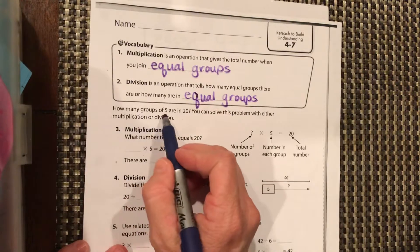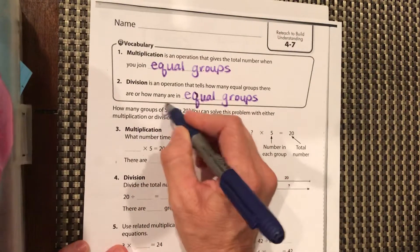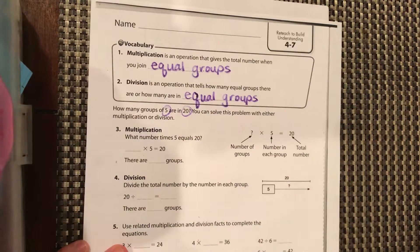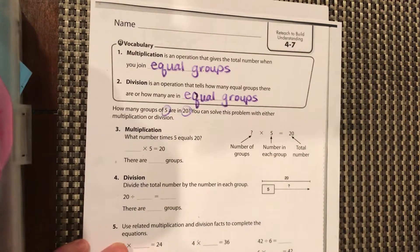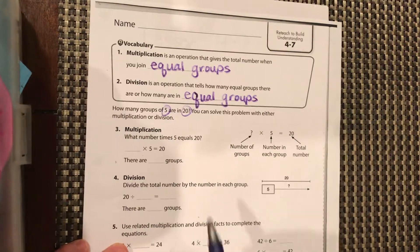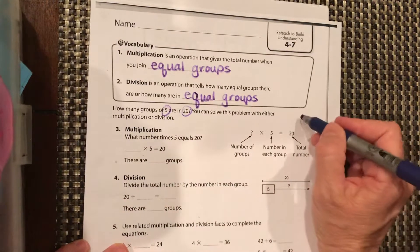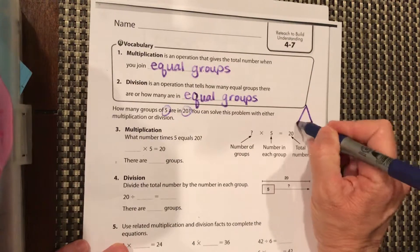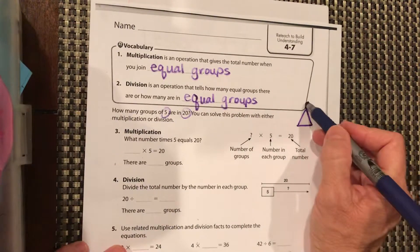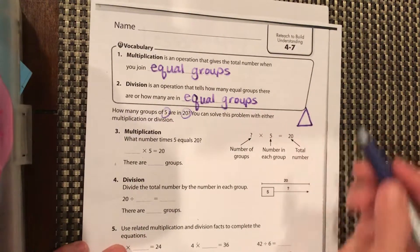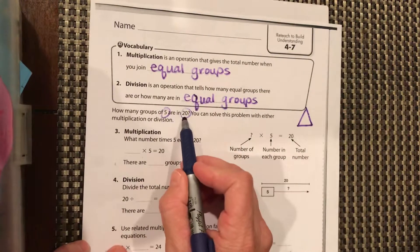How many groups of five are there in 20? You can solve this problem with either multiplication or division. First, you have to figure out, do you have the largest number here? So because you want to do your fact family triangle, you know your largest number needs to go up here. So you're talking about you have a total of 20.